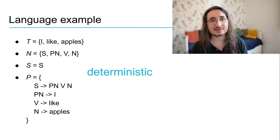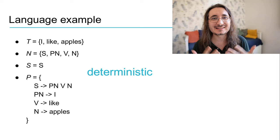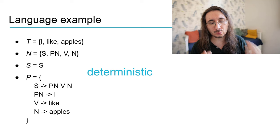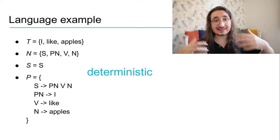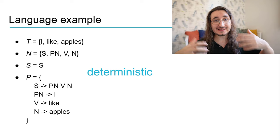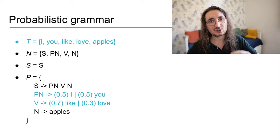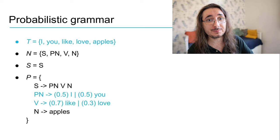This example doesn't do a lot of justice to generative grammars because it was a convoluted process to generate a very simple sentence like "I like apples." We were dealing with a deterministic grammar — meaning every time we run this algorithm with the same production rules, we always get the exact same output. There's another option to make things a little bit spicier, and that is a probabilistic grammar.